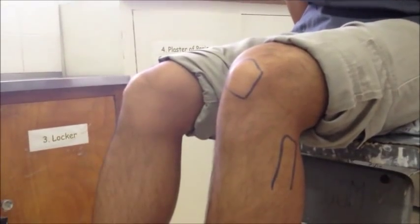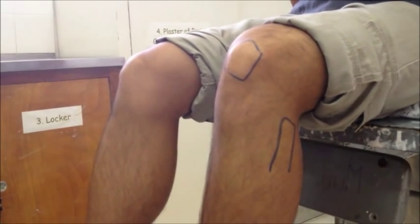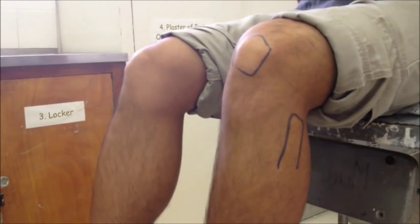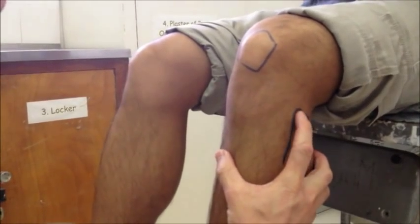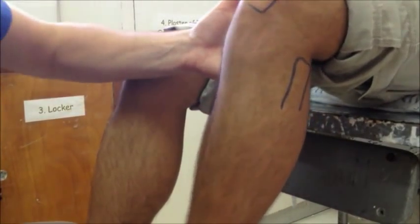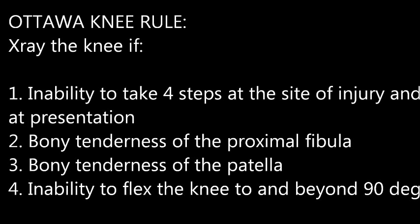In summary, do an X-ray of the knee in a patient with an indirect mechanism of injury to the knee if either they cannot weight bear, or if they have bony tenderness at the proximal fibula or patella, or if the knee cannot flex beyond 90 degrees. And that's it — use of the R2-1 Knee Rule. Thank you.